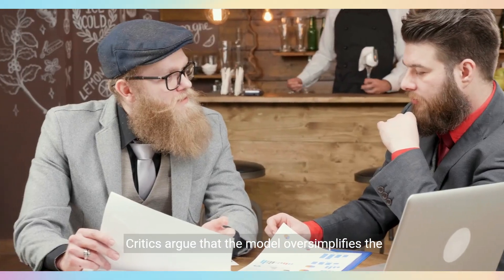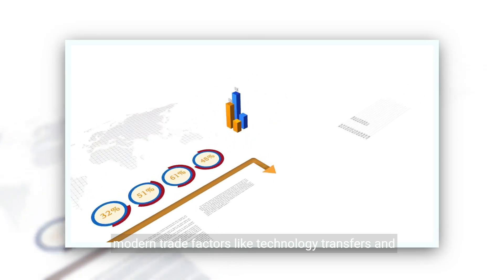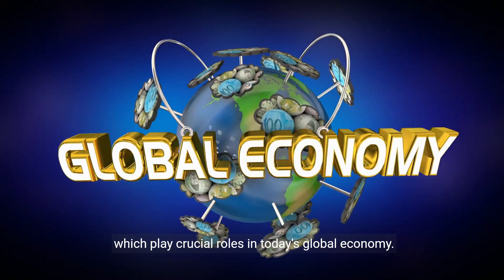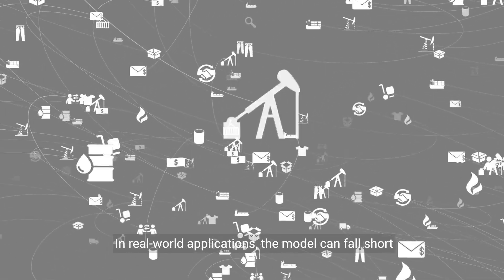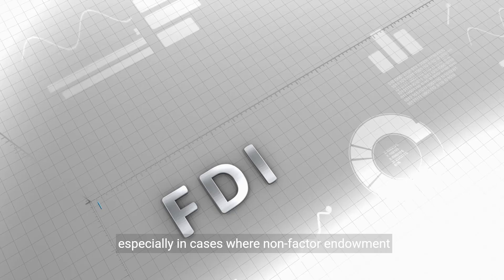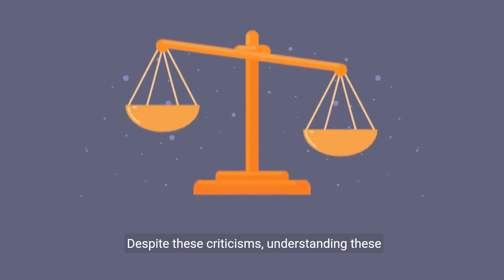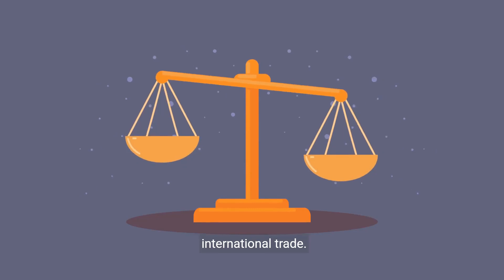Critics argue that the model oversimplifies the complexities of trade by assuming perfect competition and identical production technologies across countries. Additionally, the model often fails to account for modern trade factors like technology transfers and multinational corporations, which play crucial roles in today's global economy. In real-world applications, the model can fall short in predicting trade patterns accurately, especially in cases where non-factor endowment variables dominate. Despite these criticisms, understanding these limitations is essential for a nuanced view of international trade.